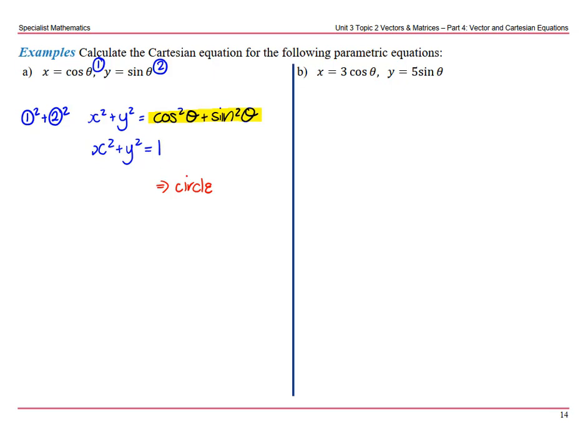Next example, again pause the video, have a go, a similar process just a little bit different result. So label your equations 1 and 2, rearrange equation 1 to get that cos theta on its own, so x over 3 would equal cos theta. Do the same to equation 2, so y over 5 would equal sin theta. So if we square those two equations now,